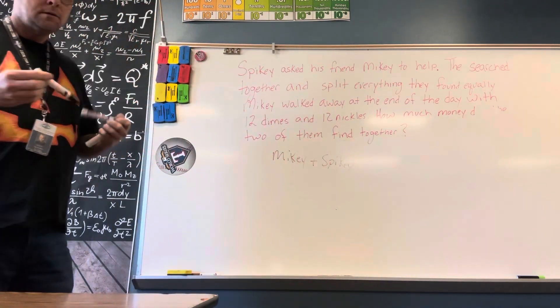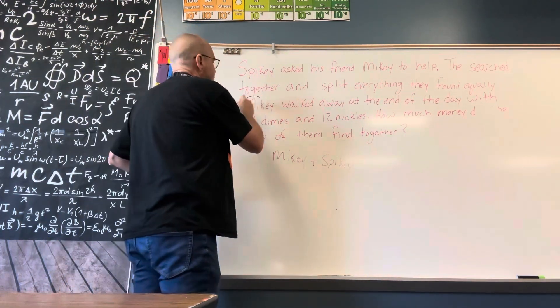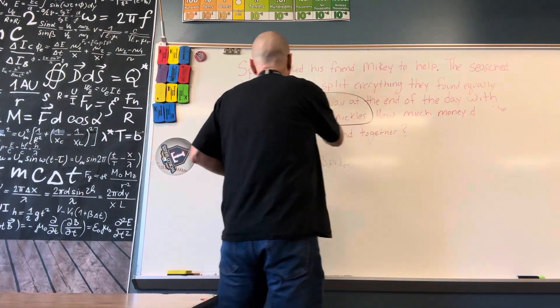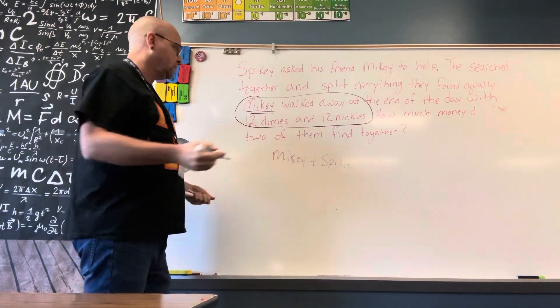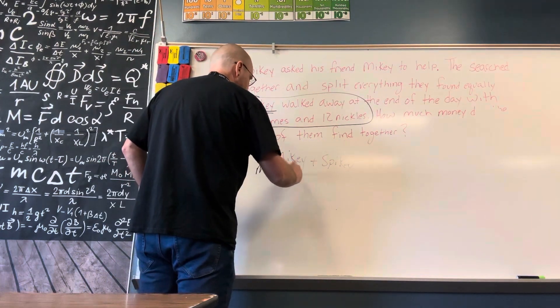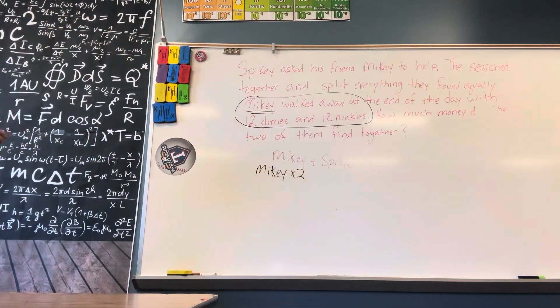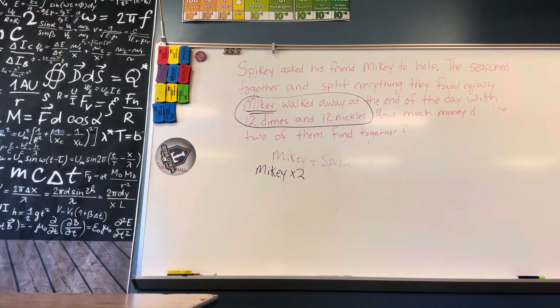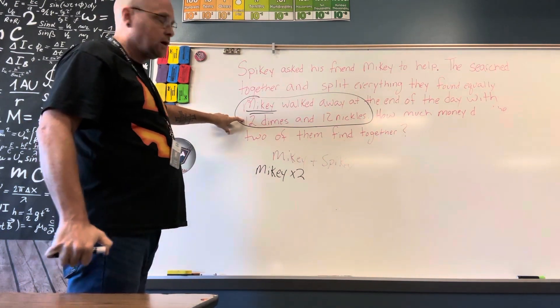Or we can multiply, because what we do know is how much Mikey had. This is how much just he got, and they split it evenly. So we could do Mikey times two, and that will be the total amount that they had together. Mikey times two. Well, we know Mikey had 12 dimes, so that's one dollar and 20 cents.